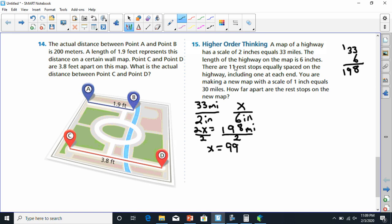Now it says there are 11 rest stops equally spaced on the highway, including one at each end. You are making a new map with a scale of 1 inch equals 30 miles. How far apart are the rest stops on the new map?